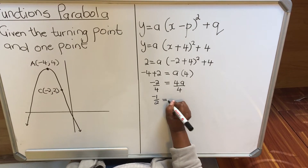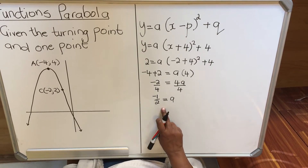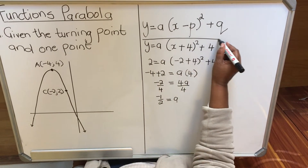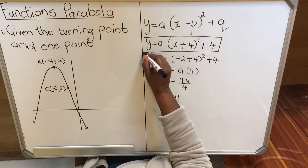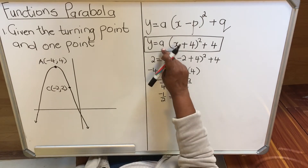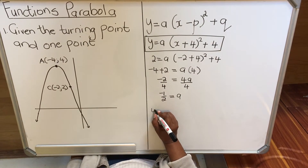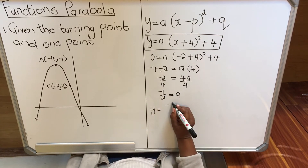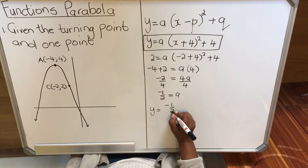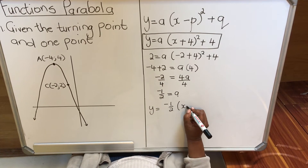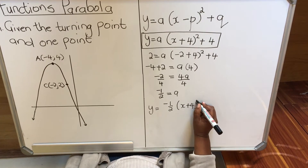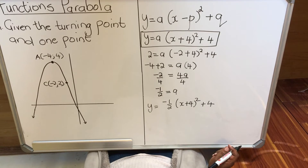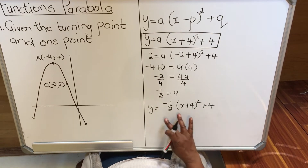Dividing both sides by 4, a = ½. So you go back where you substituted your turning point and substitute for a. Your equation is y = ½(x + 4)² + 4.